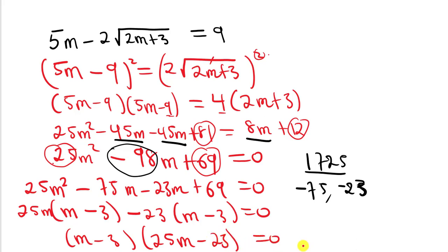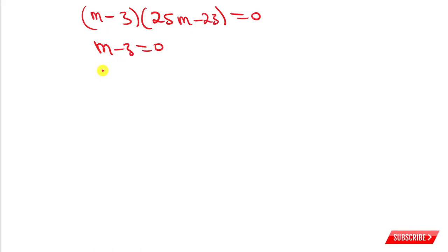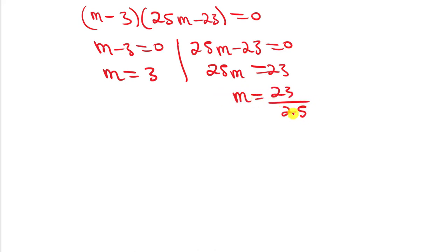We take each linear factor and equate it to zero. From m minus 3 equals 0, we get m equals 3. From 25m minus 23 equals 0, we get 25m equals 23, so m equals 23 over 25.